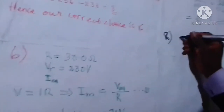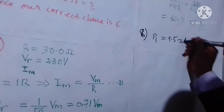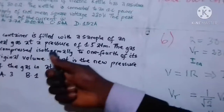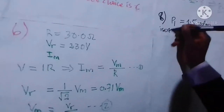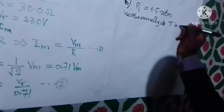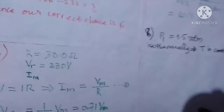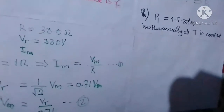Let's call this pressure P1. P1 equals 1.5 atmospheres. The gas is compressed isothermally to one-fourth of its original volume — meaning the temperature is kept constant and not changing.